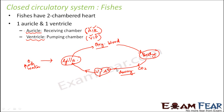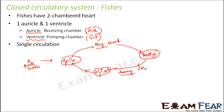Fishes are cold-blooded animals, meaning they cannot regulate their body temperature independently of the external environment. This is single circulation — there is one single pathway for circulation of the body fluid and hence the transport of gases.